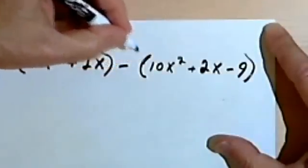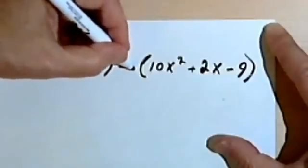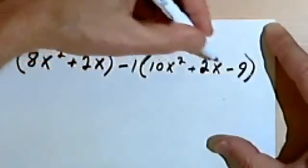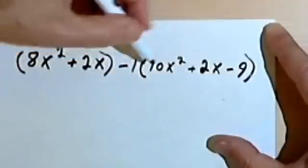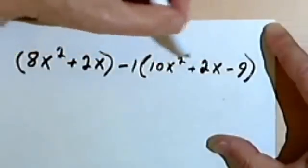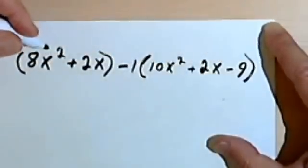Now when we have this negative sign here, that's the same... if you want to, you can think of that as being negative 1 times this thing. So in other words, we can distribute a -1 across this polynomial.